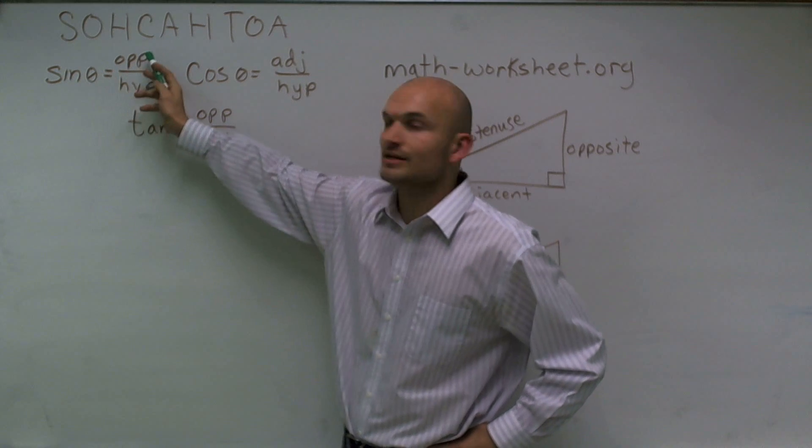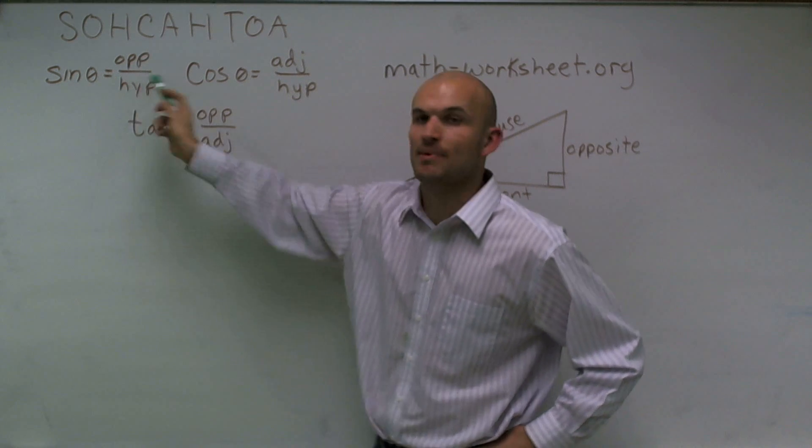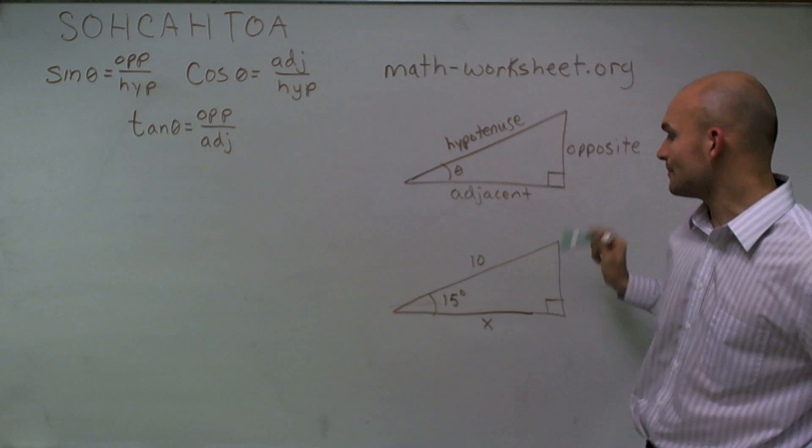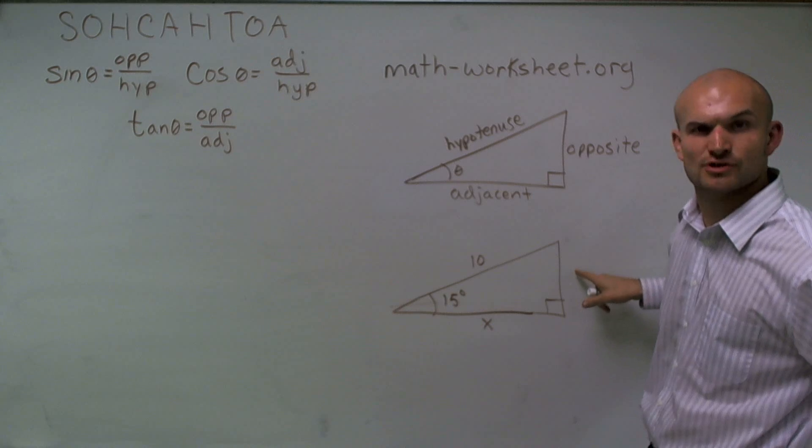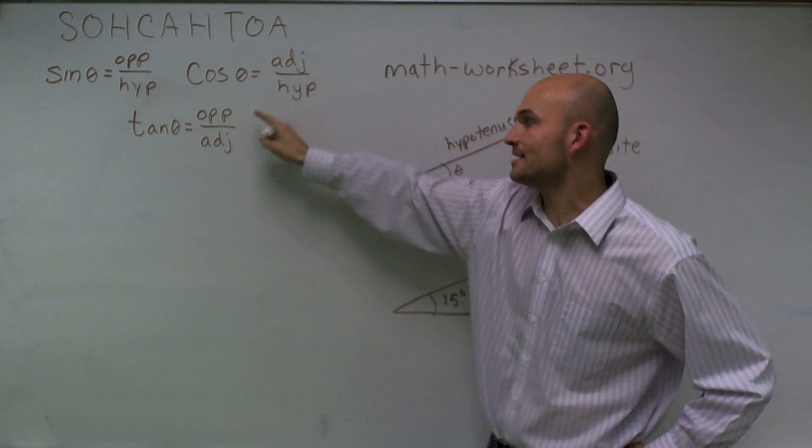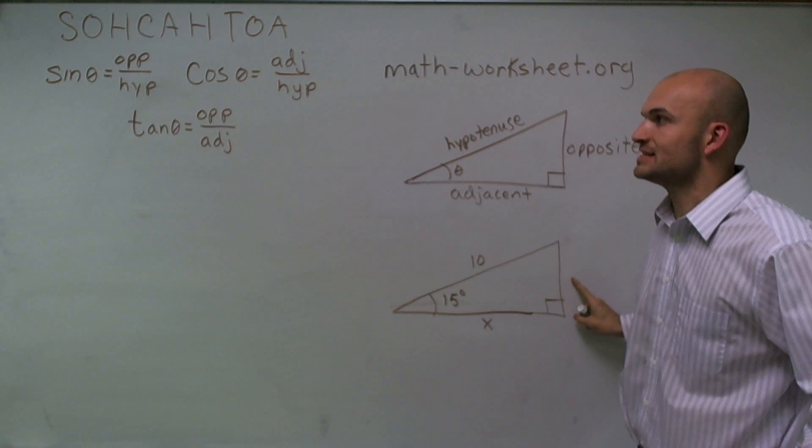Well, I know that sine represents my opposite over my hypotenuse. So I know my opposite and my hypotenuse. In this problem, I am not given the opposite side. So it would not be useful for me to use sine. Tangent, I'm also going to use the opposite side. So it will not be useful to use tangent.